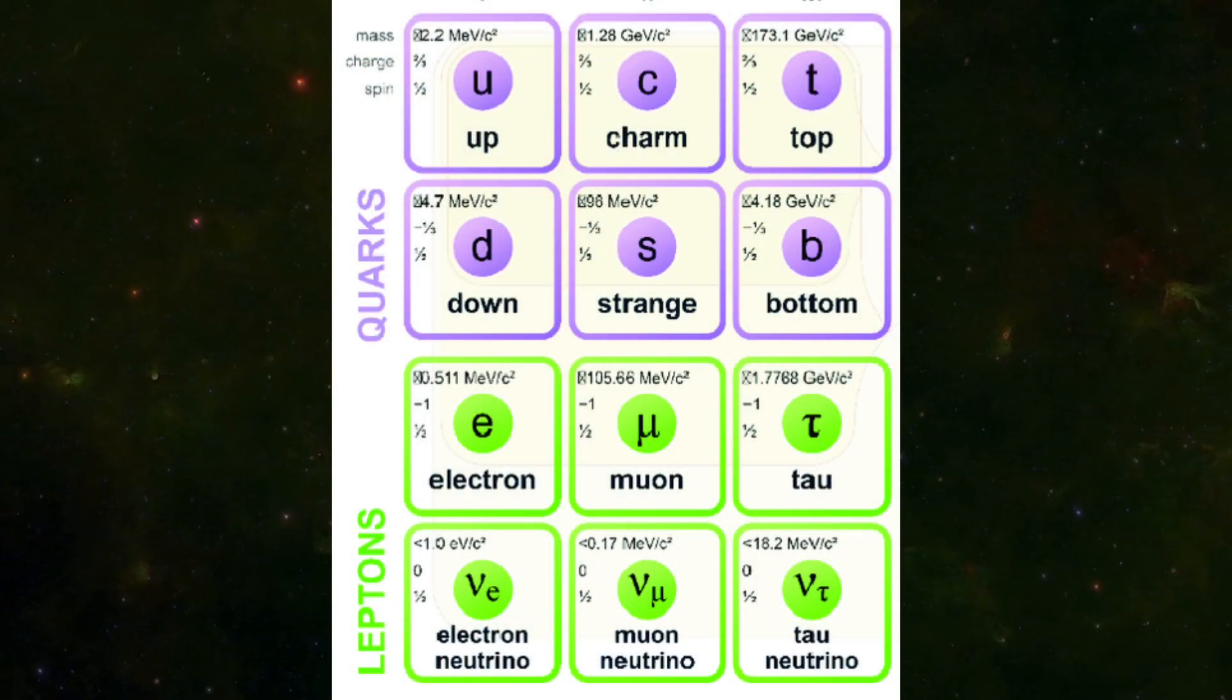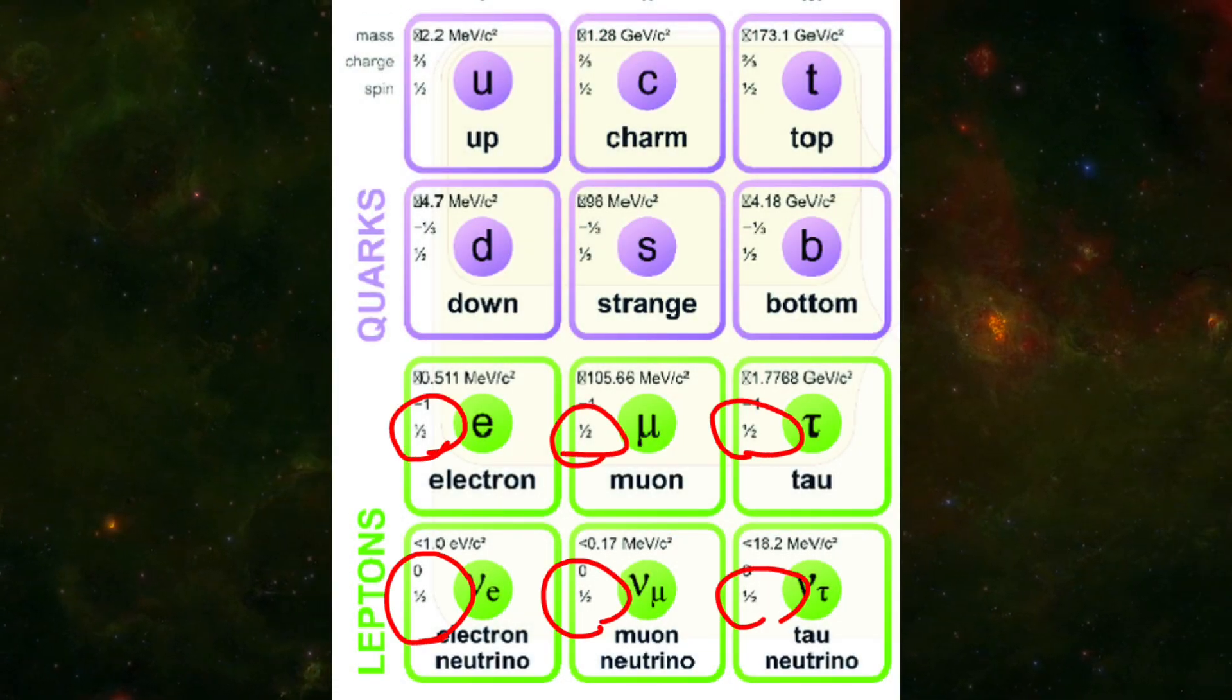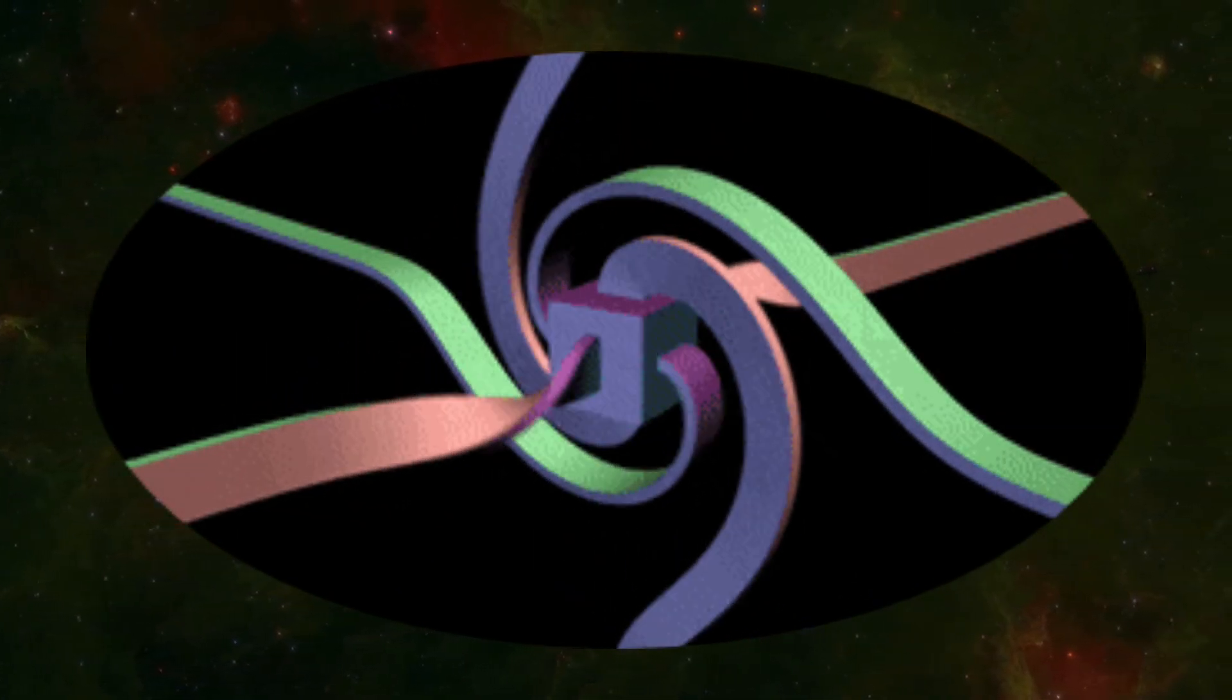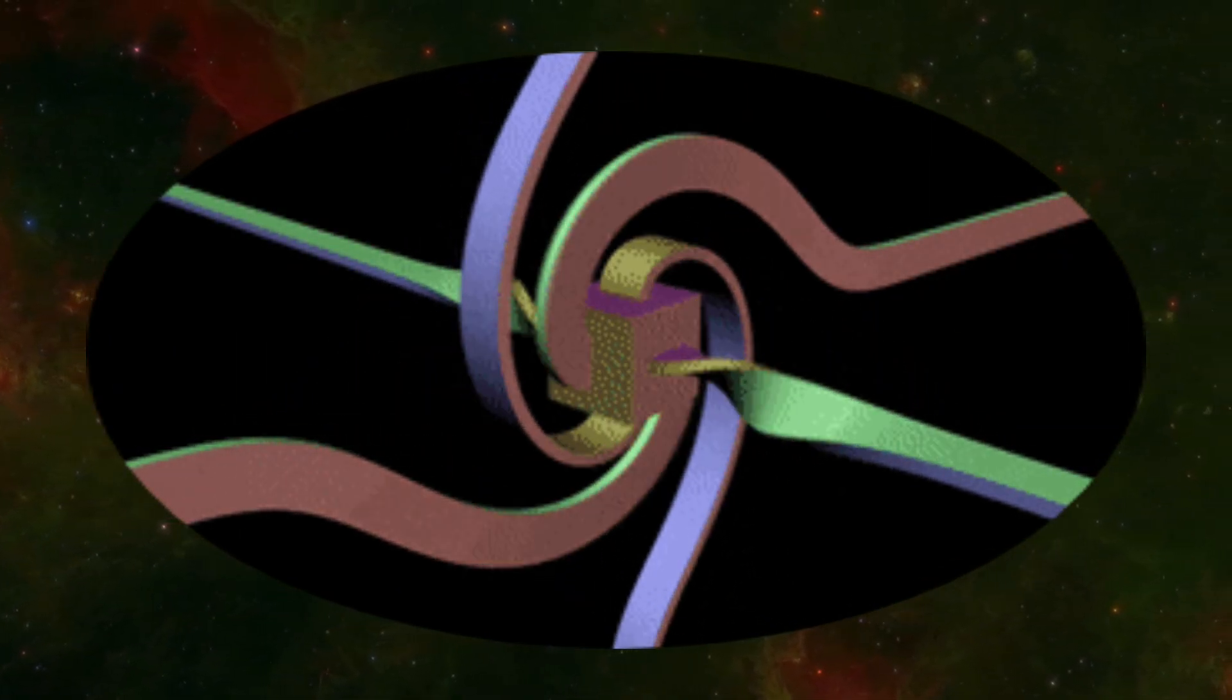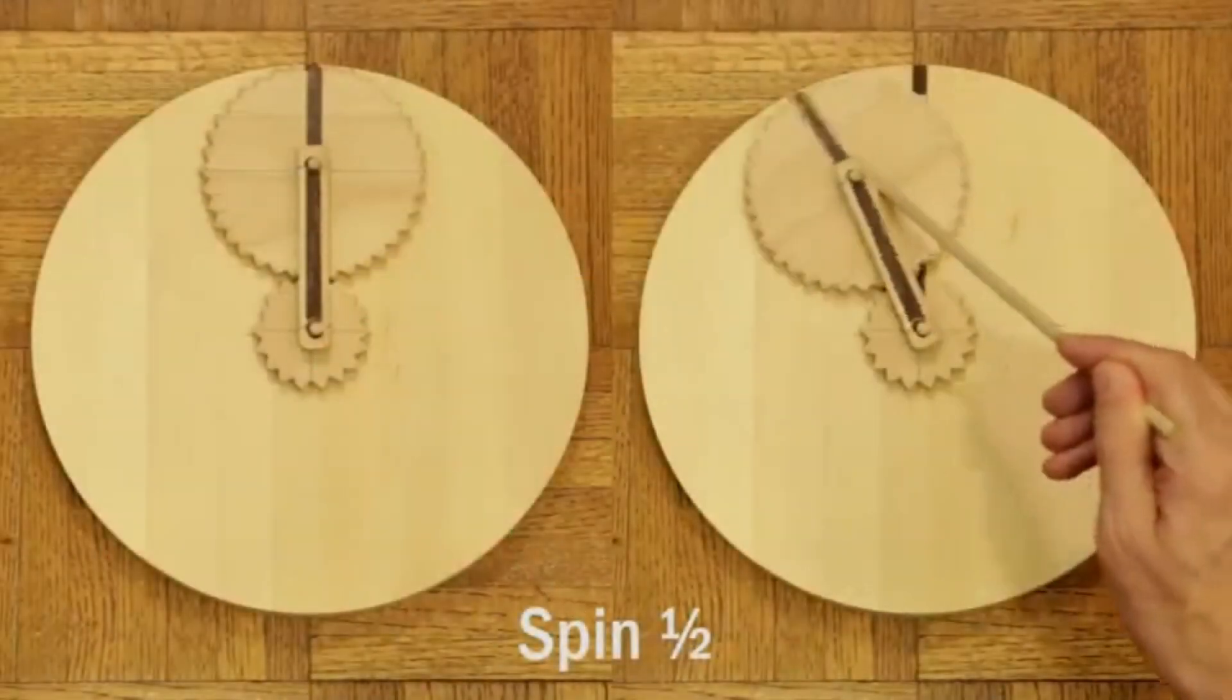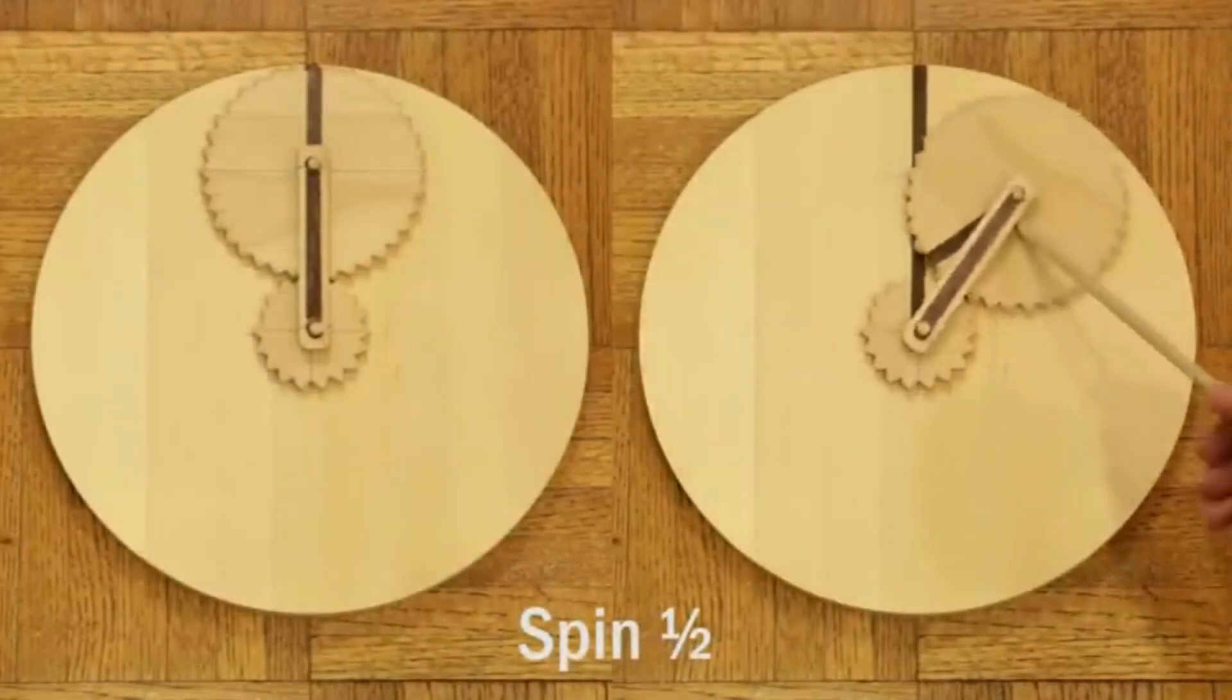Which means besides the one spin that the particle had, another half spin is needed in order to return to its first position. In this video, you can see how this man is representing the half spin.